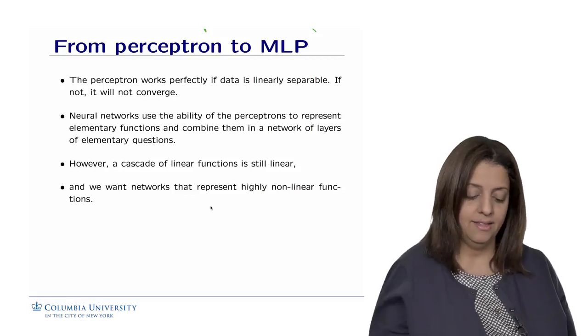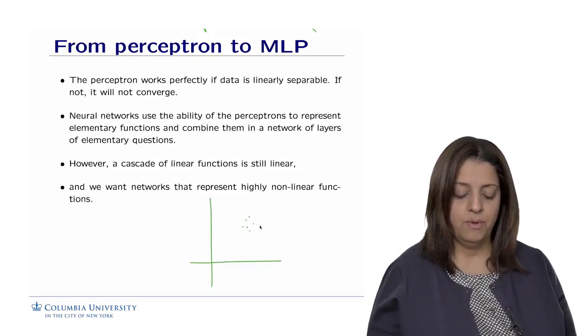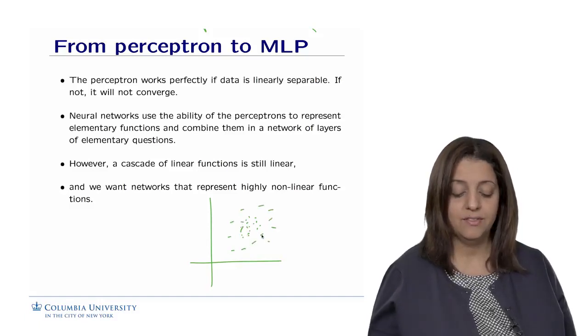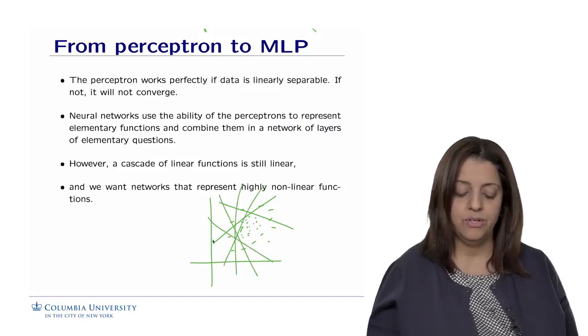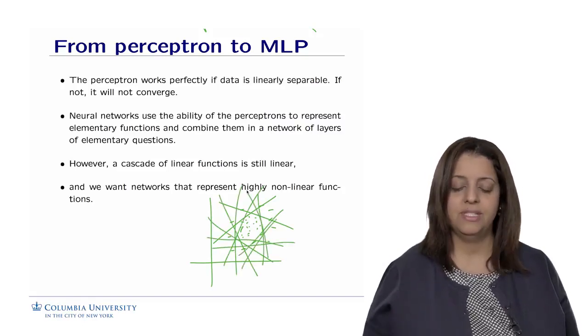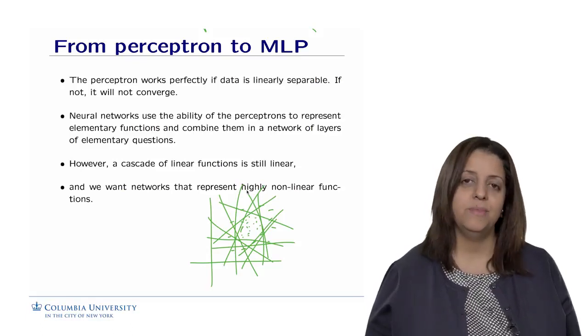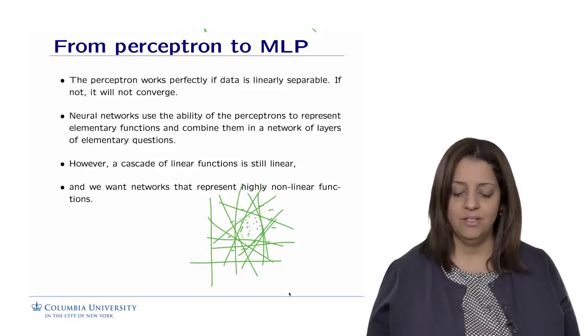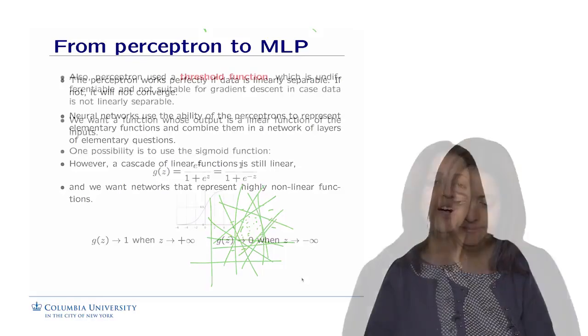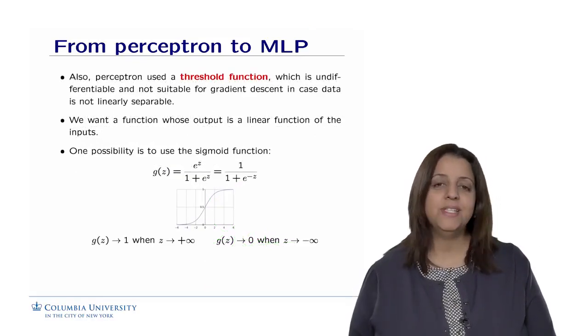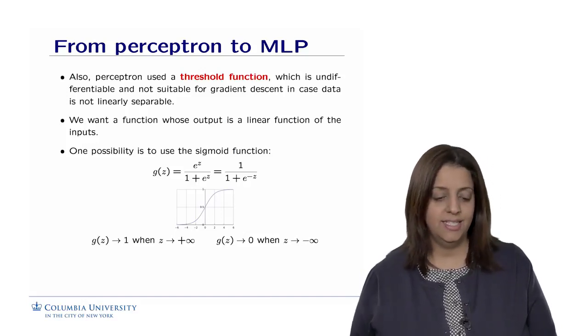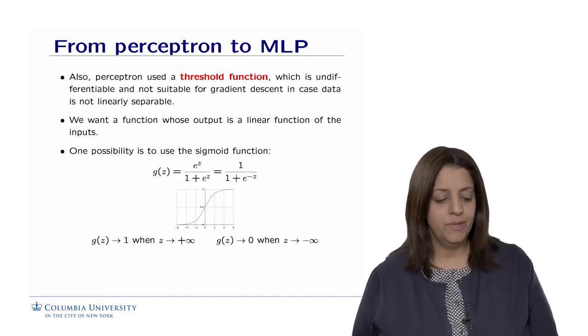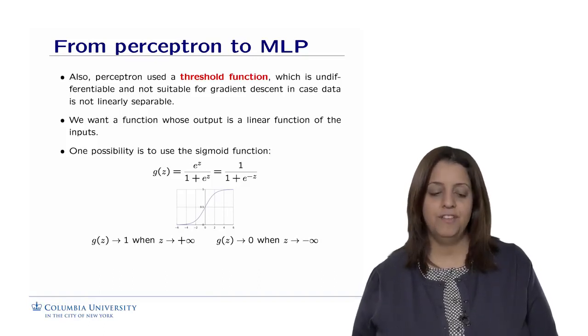For example, if we have data that looks like this, with points like here as negative and the points as positive and the points as negative, it's very hard to find several hyperplanes that would separate this data, the positive from the negative points. So we need to find something that would allow us to really represent those highly nonlinear functions. Also, the perceptron is using a threshold function, which is undifferentiable and not suitable for gradient descent. We want a function whose output is a nonlinear function of the input.